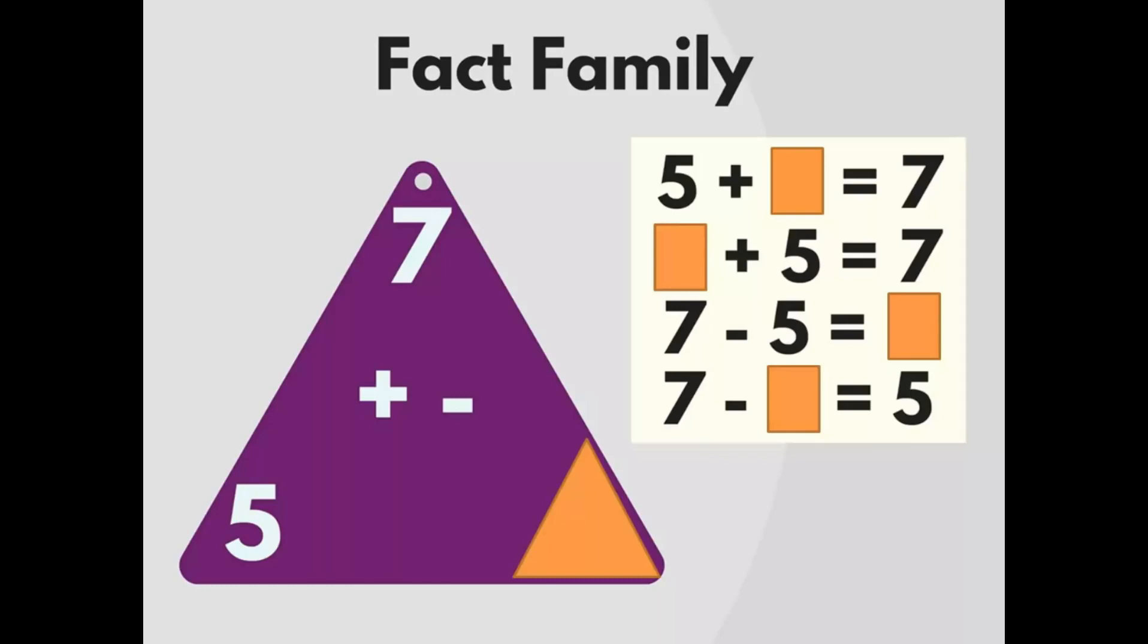Here we have 7 on top, 5 in the bottom left corner, and an unknown number in the right corner. We can think of 5 plus what number equals 7. This would be 2. So we can complete all of the facts within this fact family.